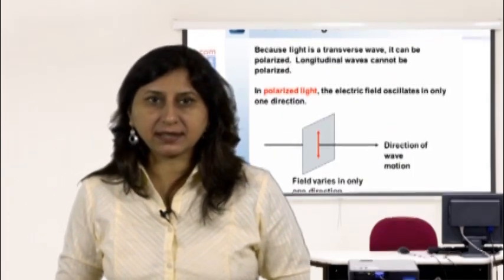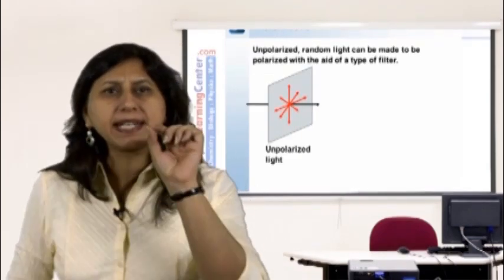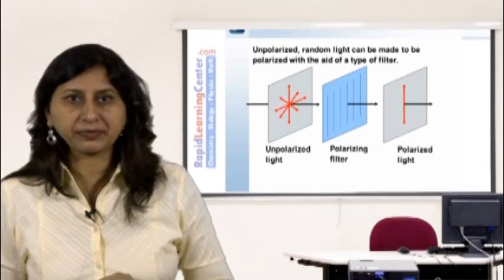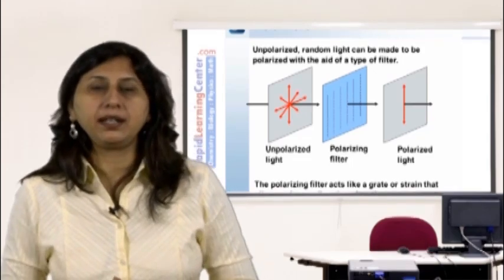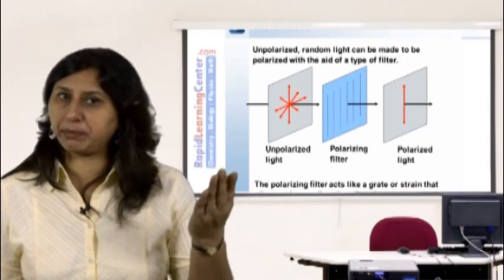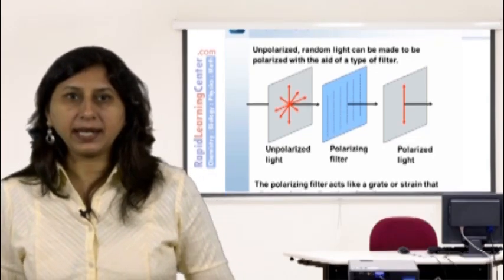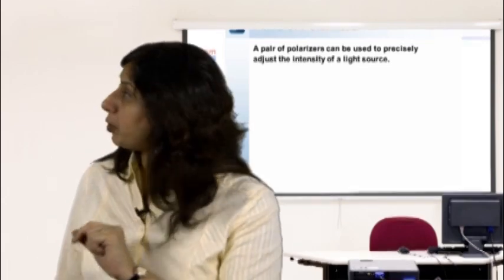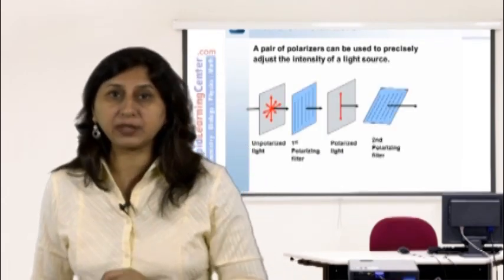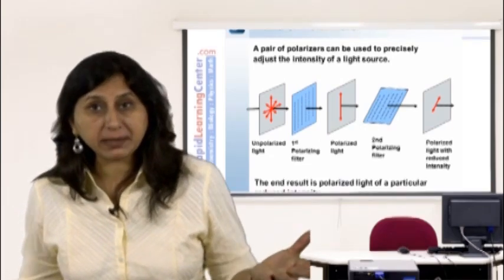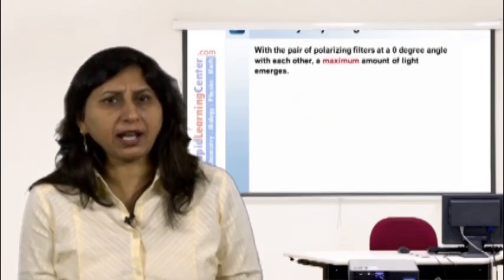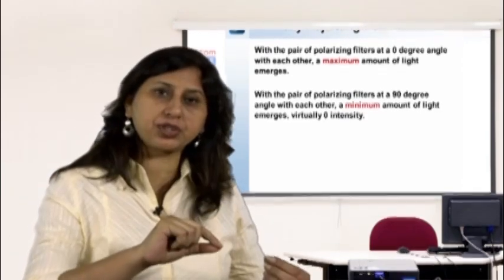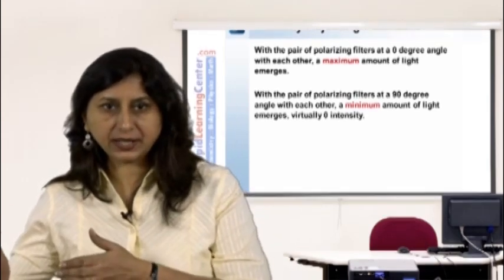A pair of polarizers can be used to precisely adjust the intensity of a light source. With two polarizing filters at a zero degree angle to each other, a maximum amount of light emerges. With them at a 90 degree angle, virtually no light emerges. By adjusting the angle between the two filters between zero and 90 degrees, the intensity of the light can be controlled.